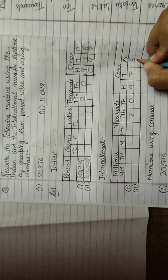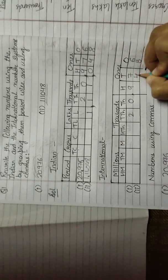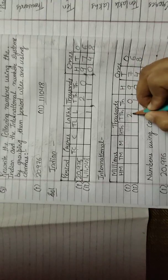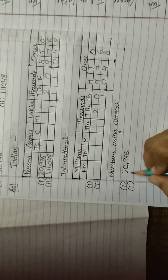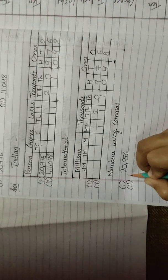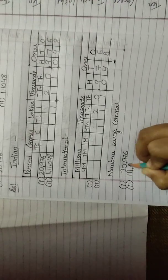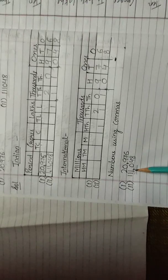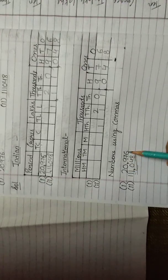For the second number in international system: starting from the right, 8 in ones, 4 in tens, 0 in hundreds — the ones period ends here, so I put the comma. The leftover digits are 1, 1 and 1. So in international system the number is written as 111,048. This number is read as one hundred eleven thousand and forty eight. The first number is read as twenty thousand nine hundred seventy six.